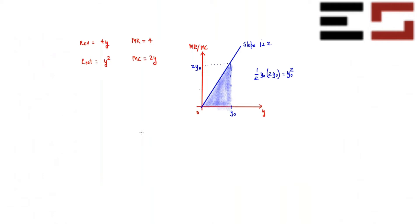So to go from marginal cost to total cost, you integrate marginal cost with respect to output. To go from total cost to marginal cost, you differentiate total cost with respect to output.